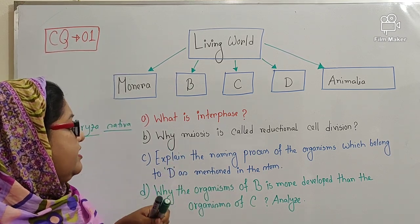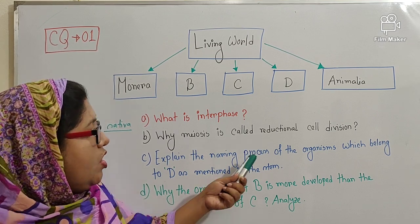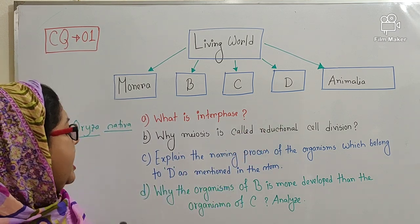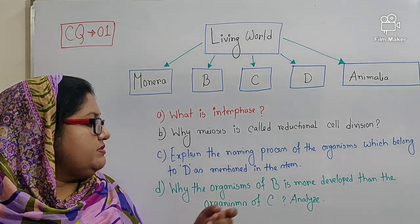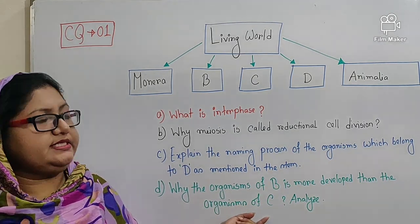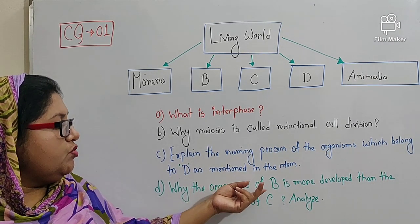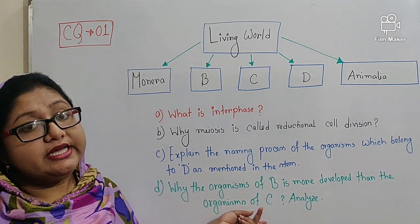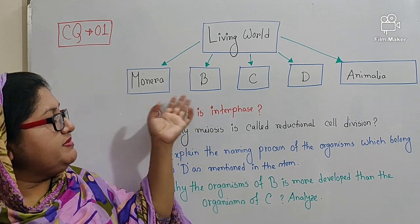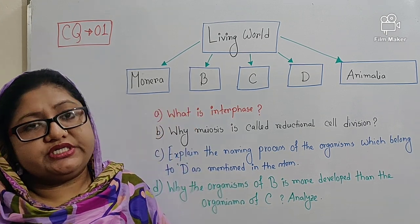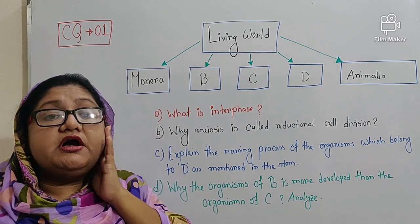At the end of this answer you can write: thus we can give the name to the organisms of Kingdom Plantae. Now, question number D: why are the organisms of B more developed than the organisms of C? In answering this question, you will first write down what is indicated by B and what is indicated by C. From the stem, you can see that after Monera, the kingdom that is present is known as Kingdom Protista, and C indicates Kingdom Fungi.